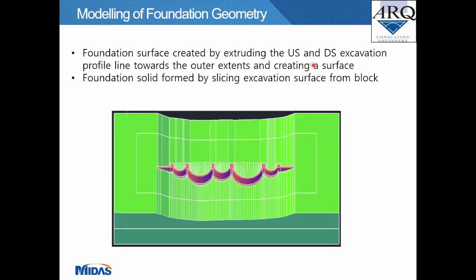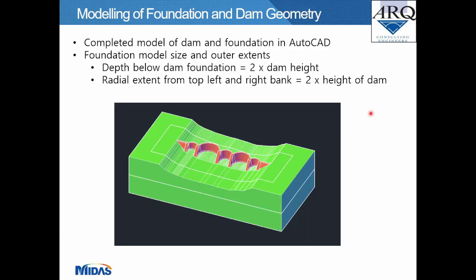Modeling the foundation geometry: the foundation surface was first created by extruding the upstream and downstream excavation profile line towards the outer extents to form a surface. The foundation solid was then formed by slicing the excavation surface from the block. The foundation model outer extents were defined as two times the dam height below the dam foundation, and a radial extent of two times the dam height from the top left and right bank — both requirements defined in FERC publications. A screenshot shows the dam and foundation solid bodies in AutoCAD.